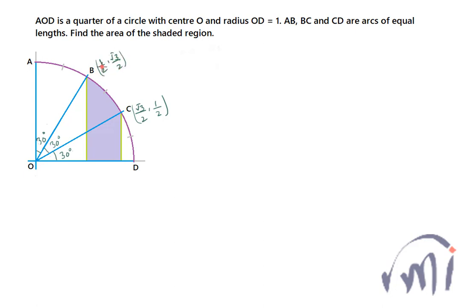To find the area of the shaded region, I'll divide it into a few known shapes: a rectangle, a right-angle triangle BCP, and a circular segment BC. I'll call the additional points Q and R. If I find the area of each and add them together, I get the shaded area.